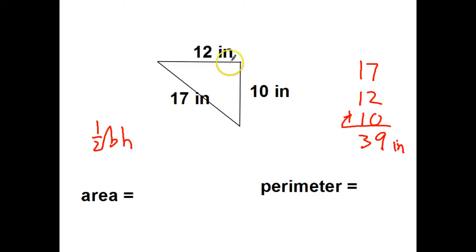This time, since right here is my 90 degree angle. There's my base. There's my height. I never want to use the side. This is called the hypotenuse. The longest side. I never use it for my base or my height.